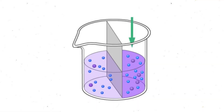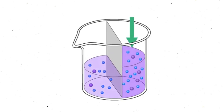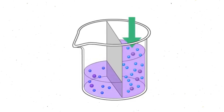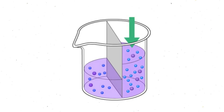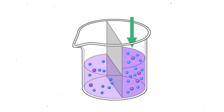Osmotic pressure is the minimum pressure which needs to be applied to a solution to prevent the inward flow of its pure solvent across a semipermeable membrane. It is also defined as the measure of the tendency of a solution to take in its pure solvent by osmosis. Potential osmotic pressure is the maximum osmotic pressure that could develop in a solution if it were separated from its pure solvent by a semipermeable membrane.